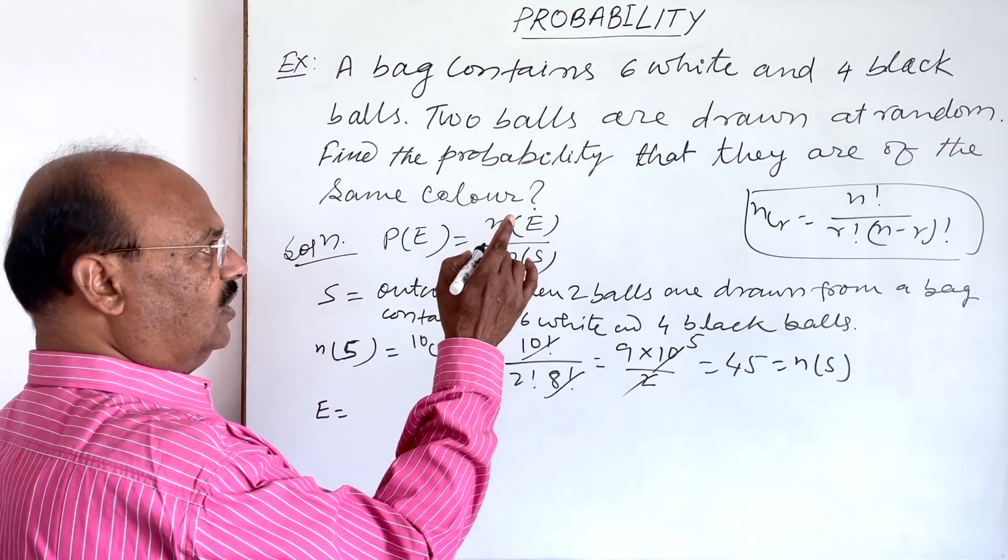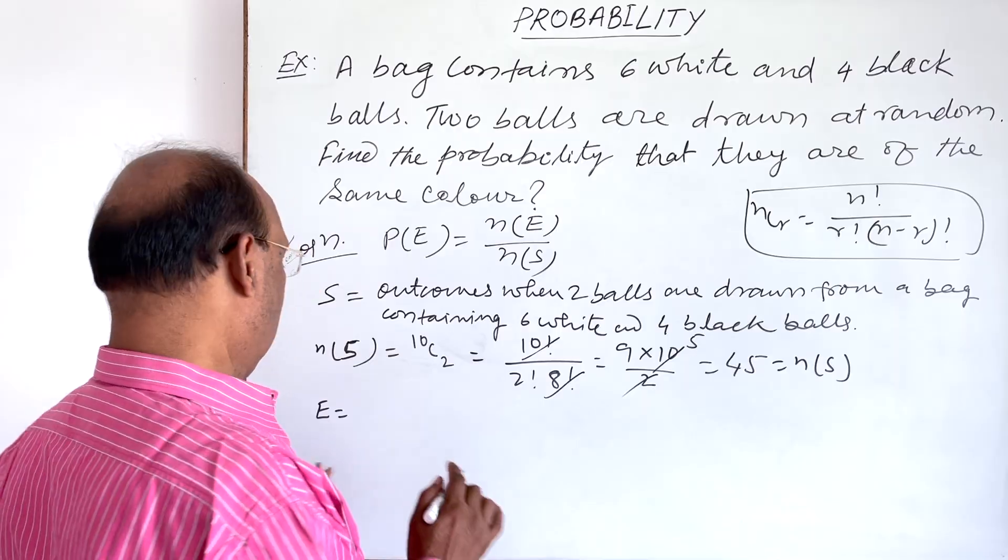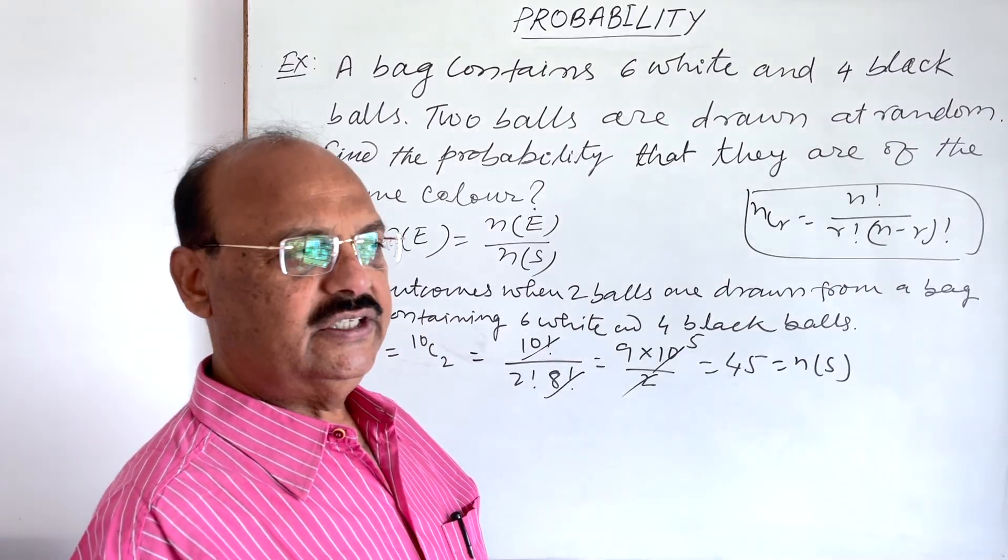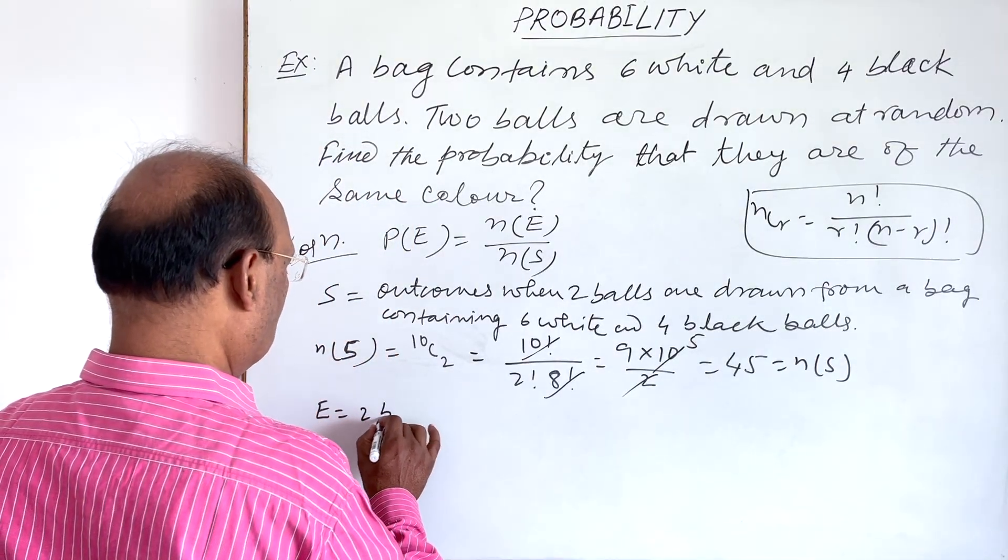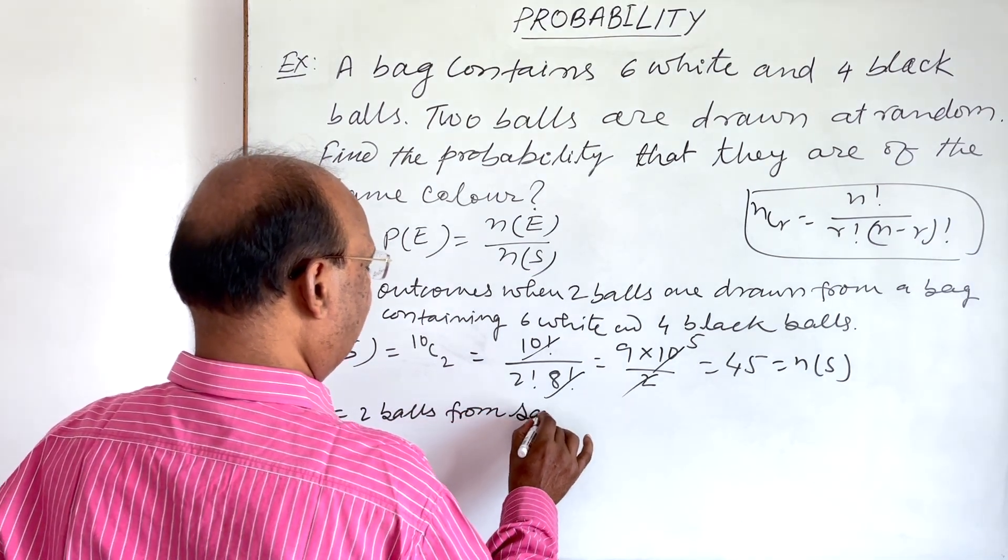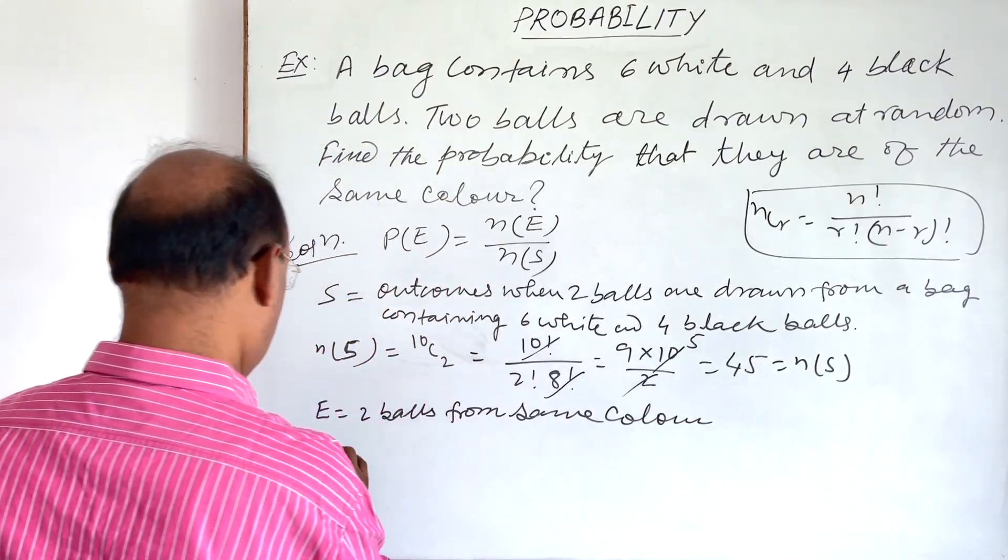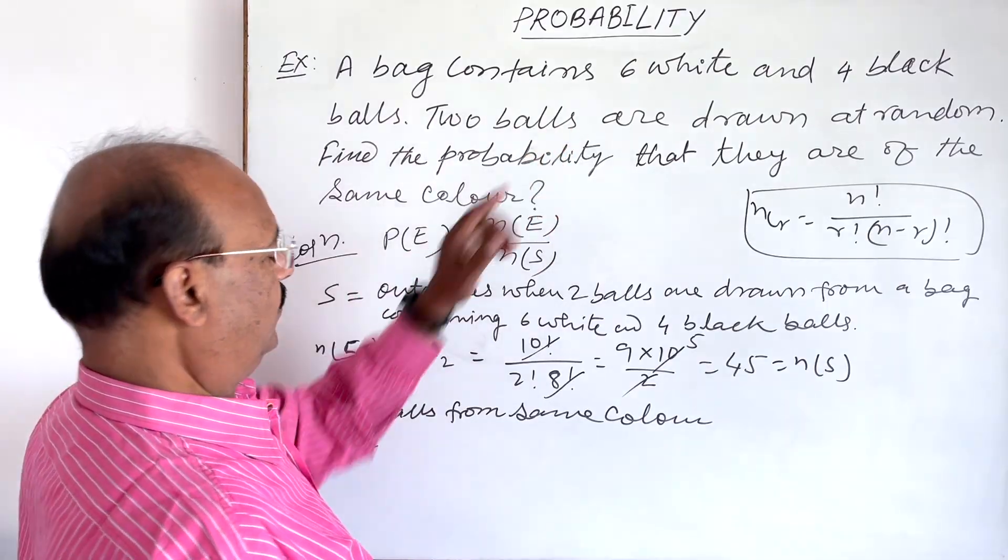Event is a set which consists of favorable outcomes. So we need here two balls from the same color. This is our favorable event. So we can calculate here n(E) is equal to, there are six white balls, so 6C2 since we are drawing two balls.